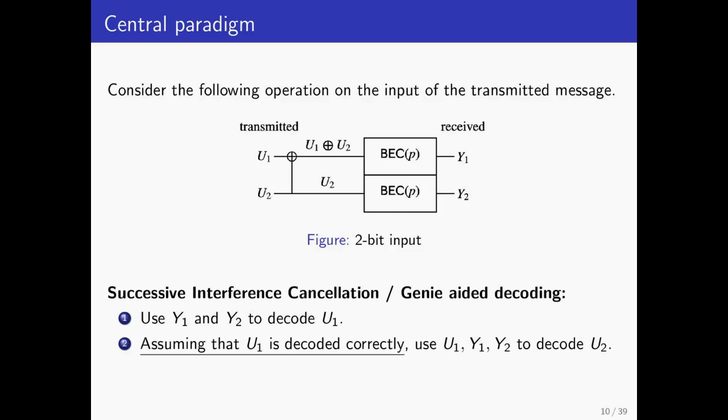On the other end, let's consider a simple iterative procedure to estimate U1, U2 from Y1, Y2. In the first round, we use Y1 and Y2 to try to estimate U1, and in the second round, let's use Y1, Y2 as well as our estimate for U1 from the first round to decode U2.